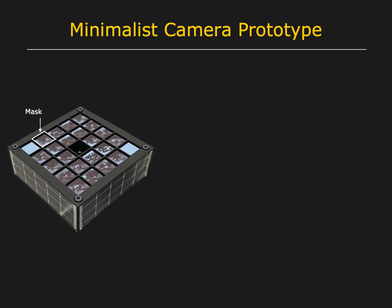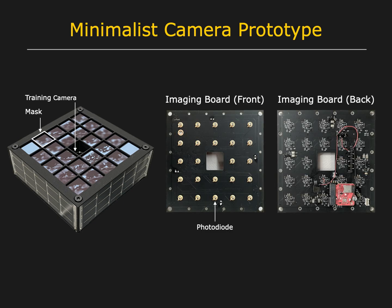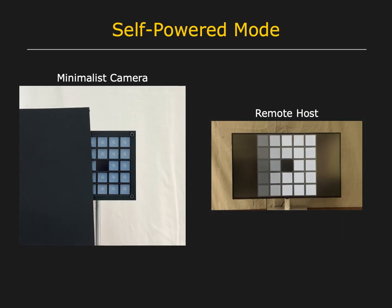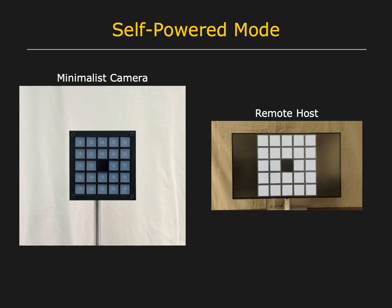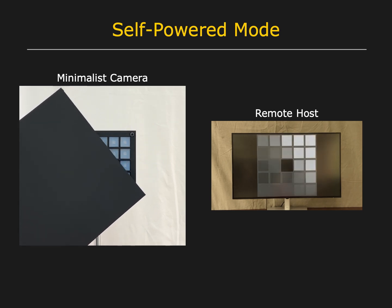We have prototyped a minimalist camera with 24 freeform pixels. There is a traditional camera in the center that is only used to capture videos for training the masks of the freeform pixels. The imaging board of the minimalist camera shows an array of photodiodes. The back of the board includes a circuit for each pixel and a microcontroller that is Bluetooth enabled. The four sides of the camera have compact solar panels to harvest energy from the environmental illumination, which is stored in a supercapacitor. Here you see the minimalist camera in fully self-powered mode. It is able to read out and transmit the 24 measurements to a remote host without the use of an external power supply or a battery.